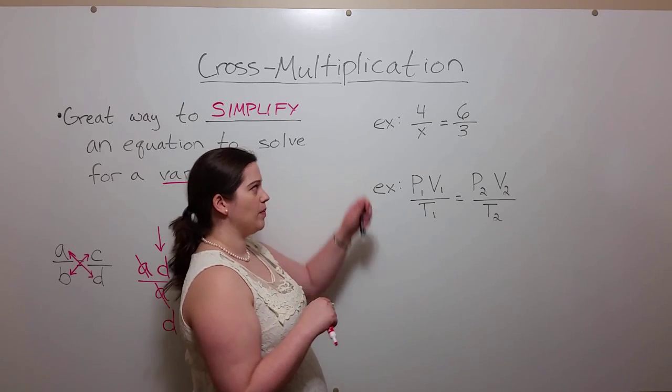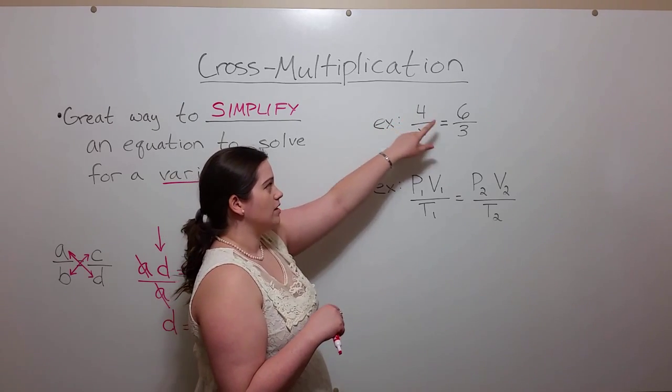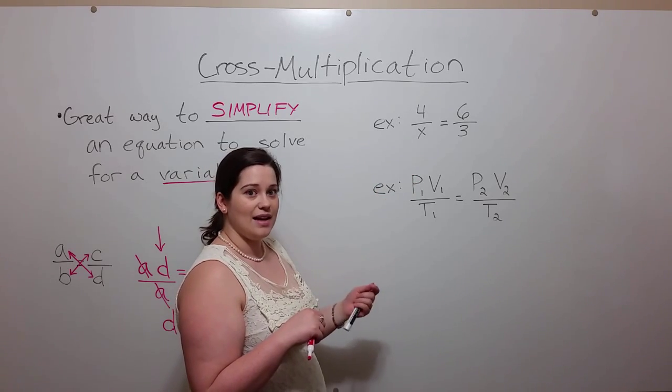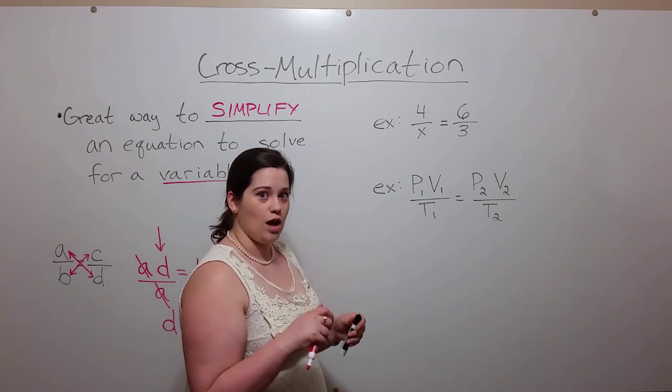Let's look at another example. Here we filled in numbers for some of those variables and you're asked to solve for X. Again, simplify this using cross multiplication.